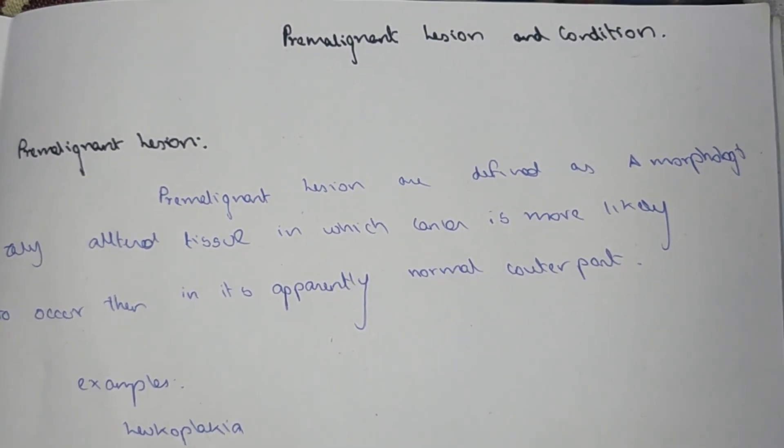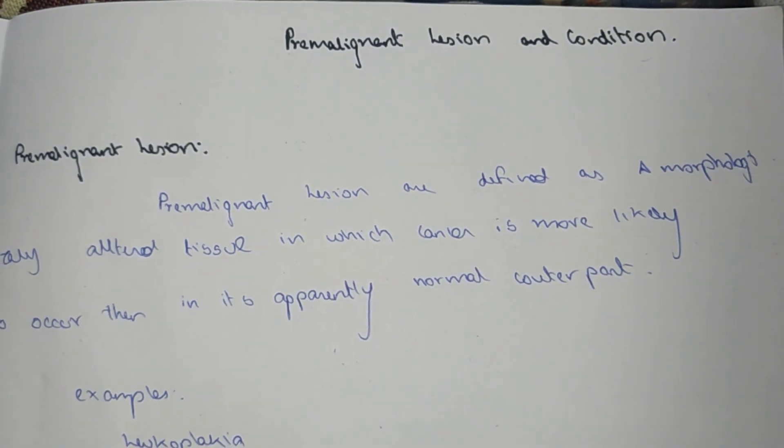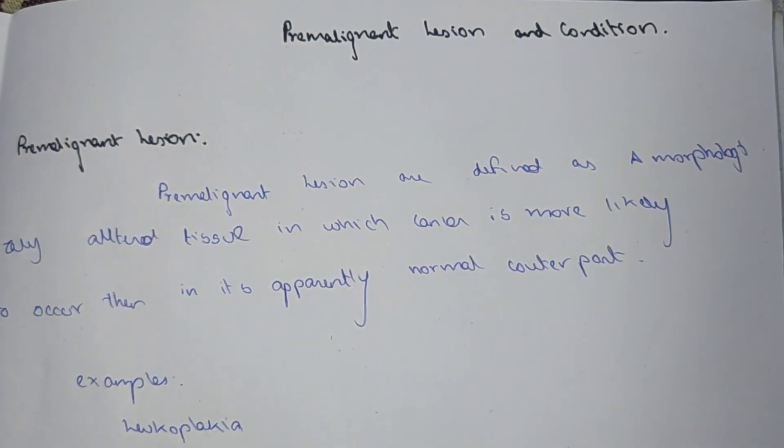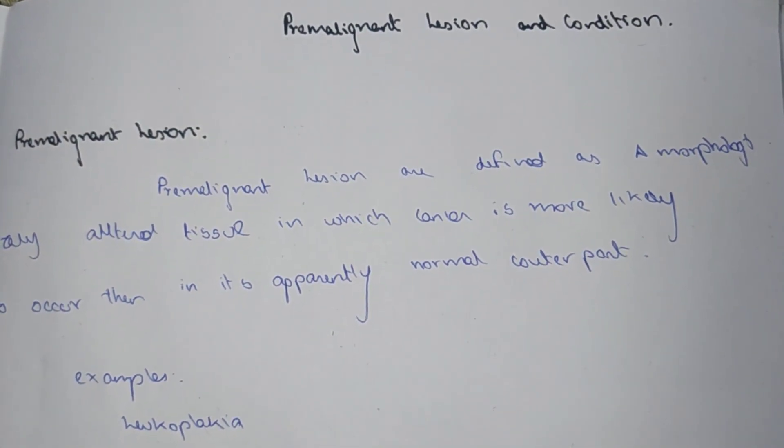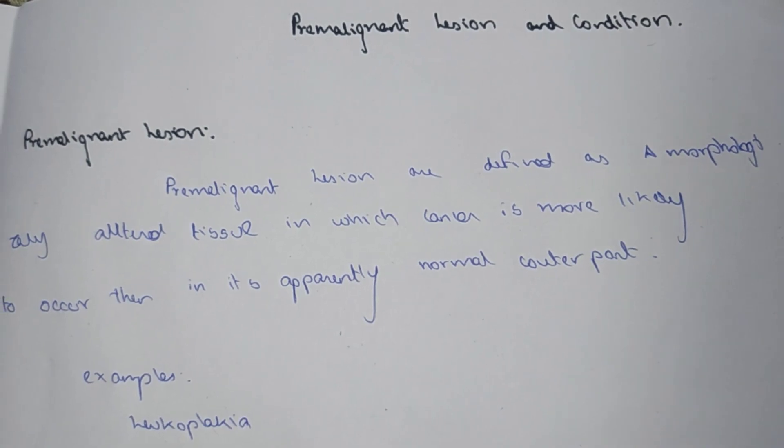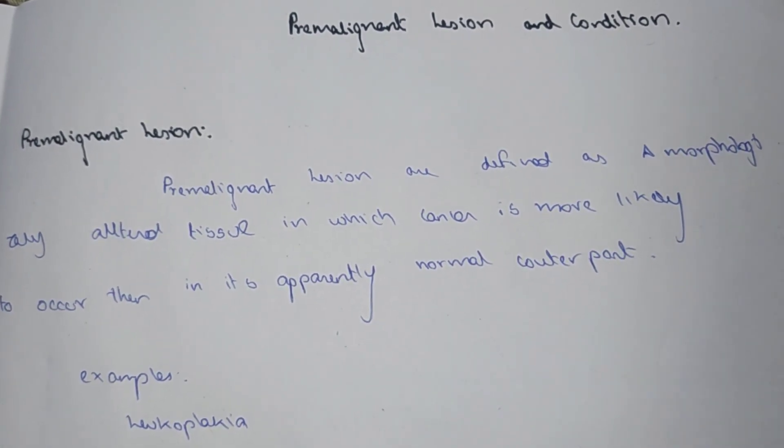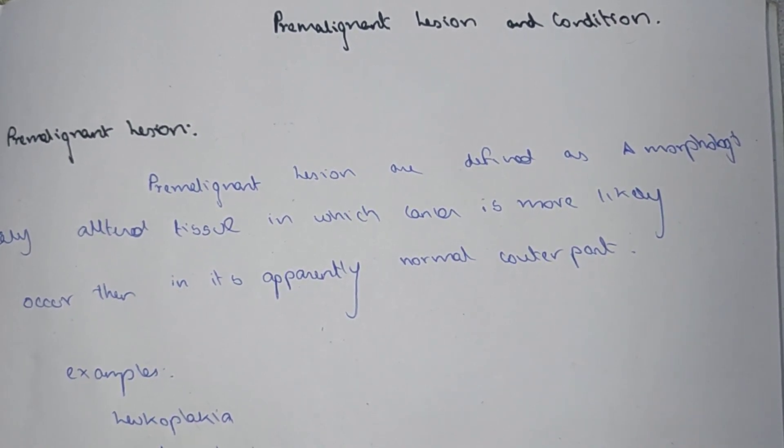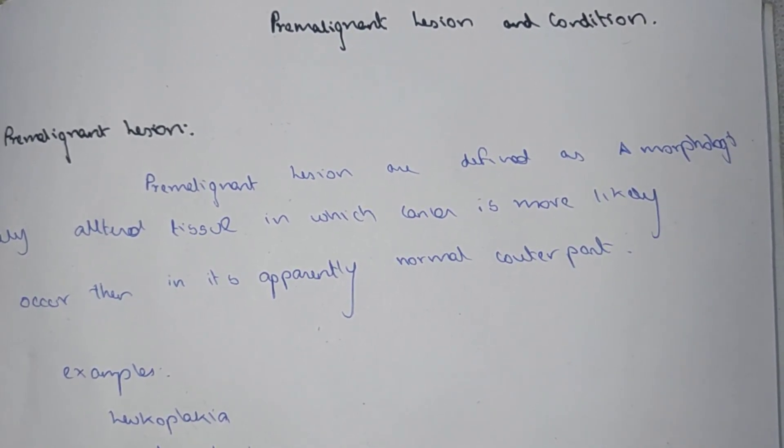in which cancer is more likely to occur than the apparently normal counterpart. The pre-malignant lesion is defined as a morphologically altered tissue in which cancer is more likely to occur than the normal apparent counterpart.